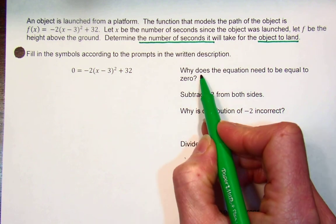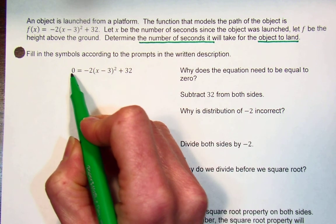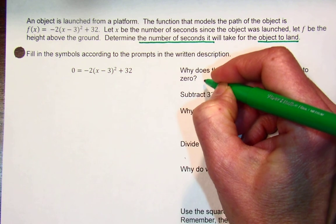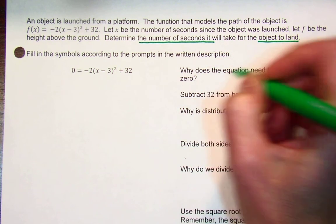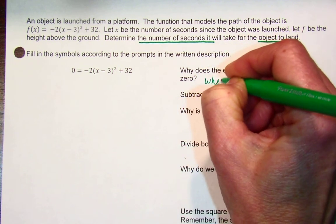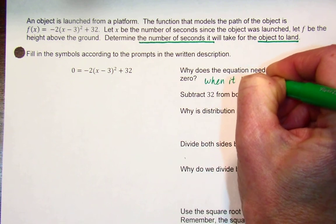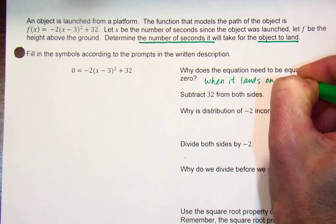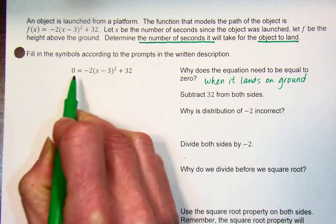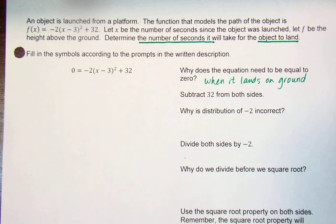Why does the equation need to be set equal to zero? Because it's going to be on the ground. When it lands on the ground, it is zero feet in the air. That's why it's important to set it equal to zero.